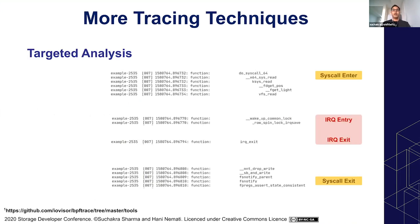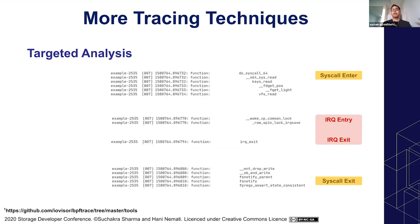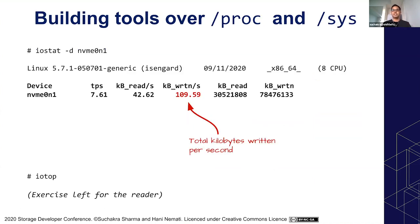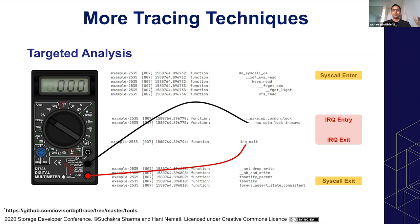Let's discuss why we need more advanced techniques than the ones we already have. The system has exposed a lot of data through events we can understand, but why do we need something more? The first reason is targeted analysis. With systems like procfs and sysfs or any other tooling, you get data that's already provided — you can't go further than what the tool gives you.